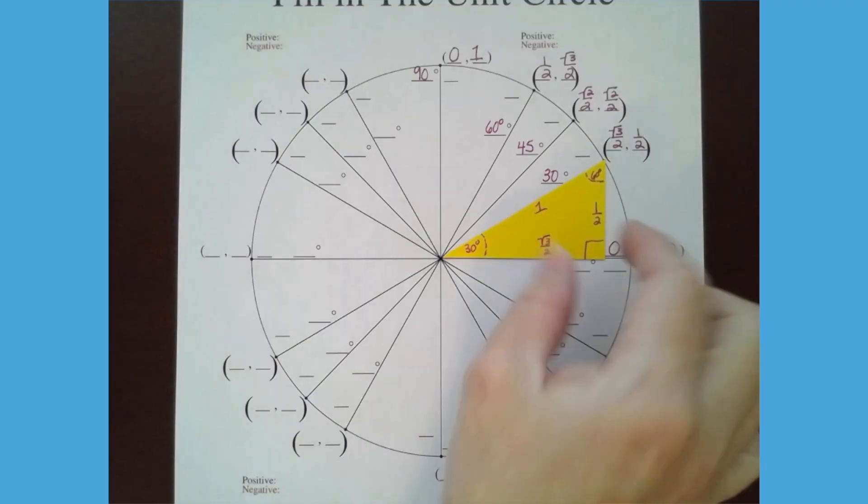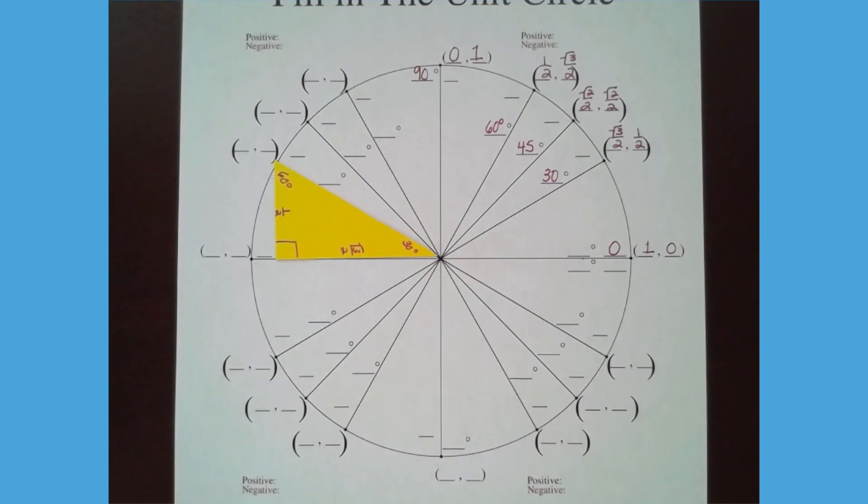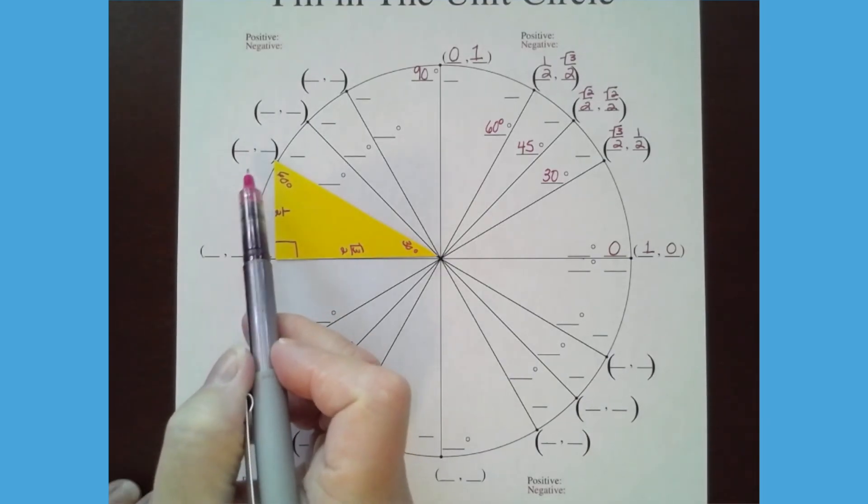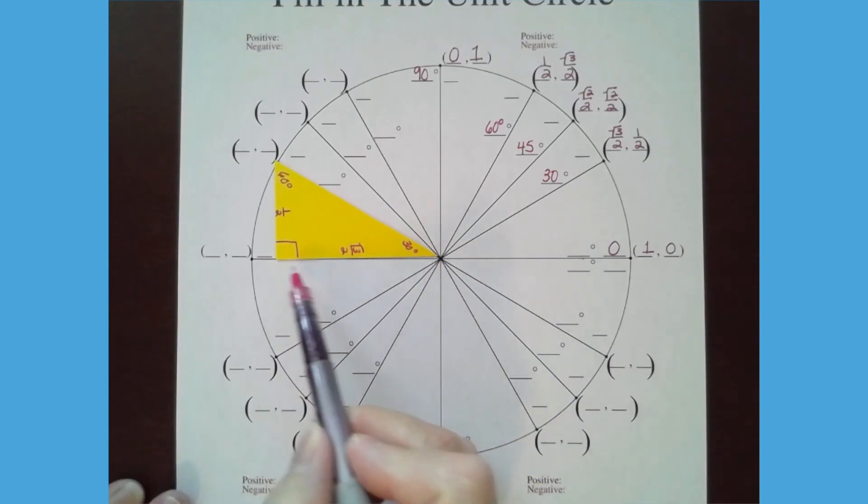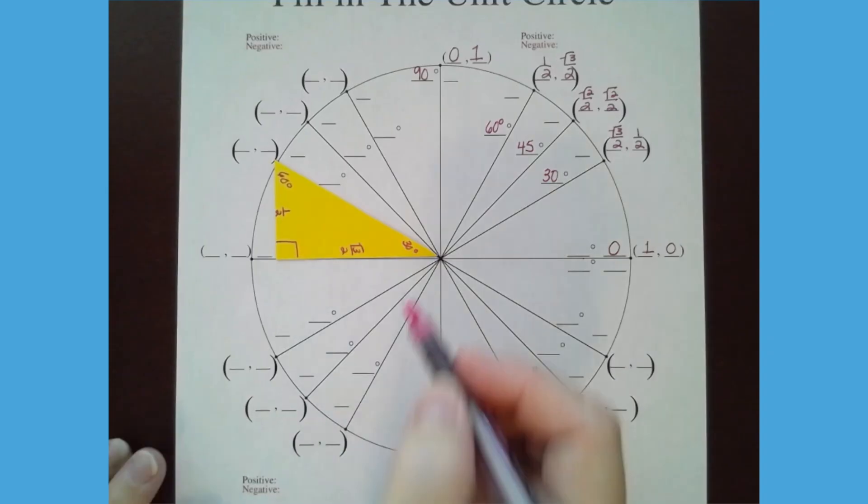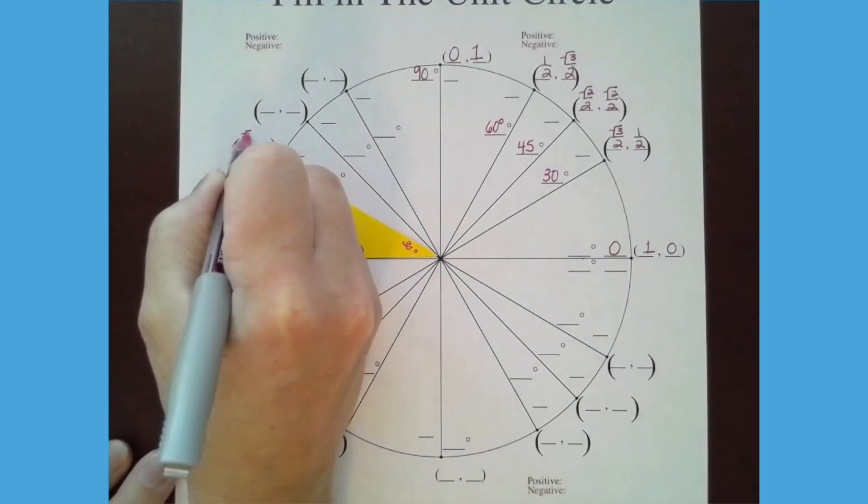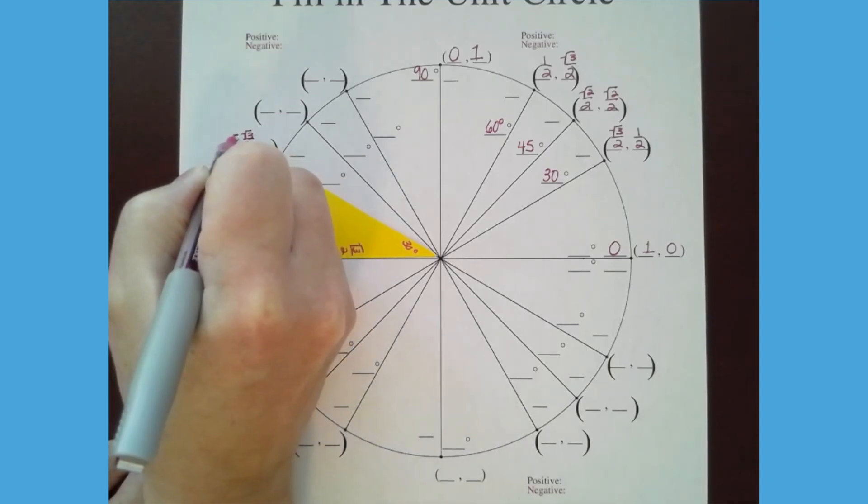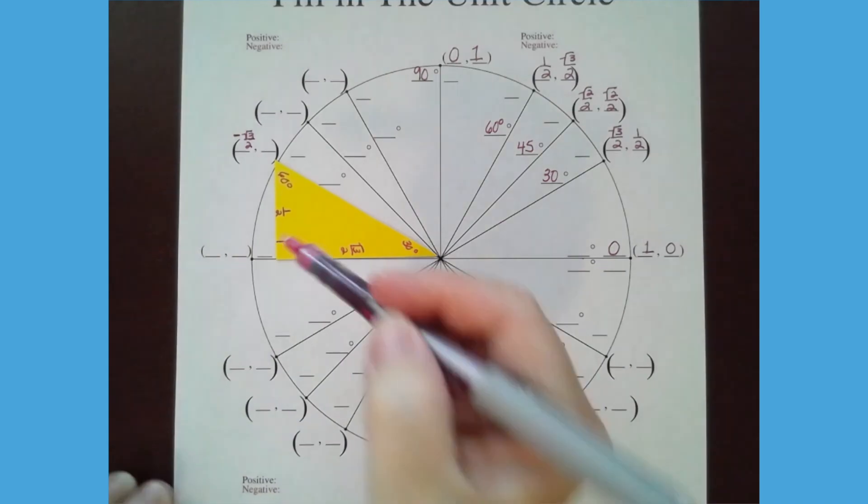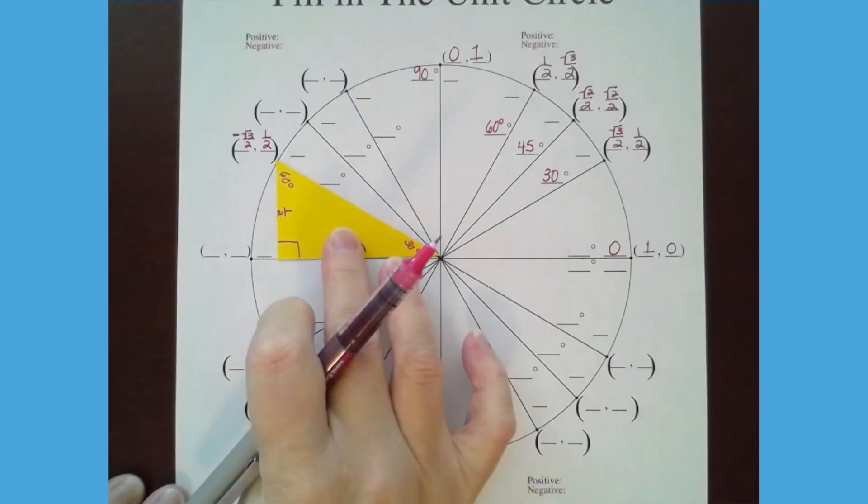So if you take this triangle and you flip it over like that, it hits that point. If I want to know this point on the circle, then I need to know the length. I know that length, it's root 3 over 2. The only thing I have to take into consideration is that this length is to the left of zero. So when you go left of zero, your x-coordinate will always be negative. So I know the length already, it's the same length as what we had over here. It's the same triangle, so the value is root 3 over 2, but I have to put a negative there to indicate I'm going left of the origin.